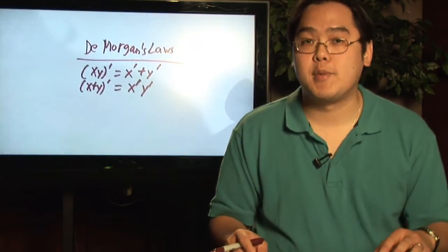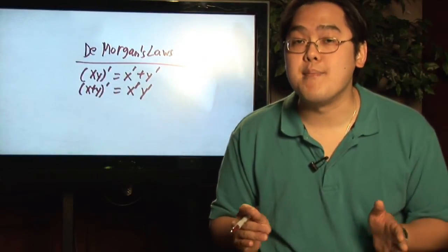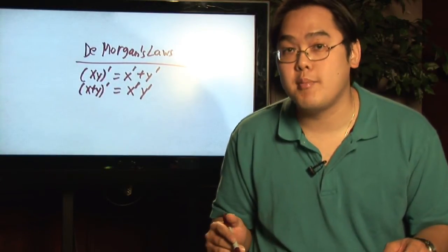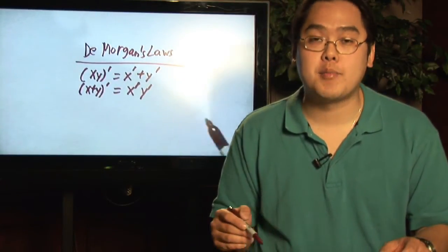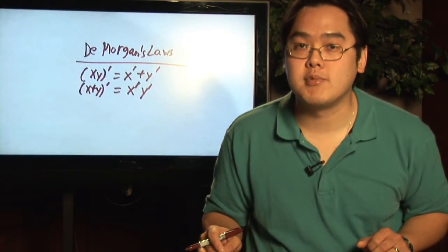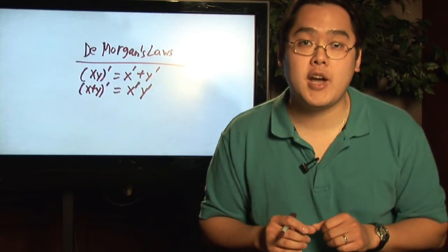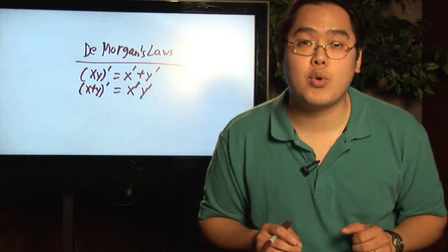And last but not least, we have DeMorgan's laws, where if you have the prime of xy, it becomes addition, x prime plus y prime, and if you have the prime of x plus y, you end up having multiplication, x prime times y prime. So to simplify Boolean Algebra, knowing these rules are very important.